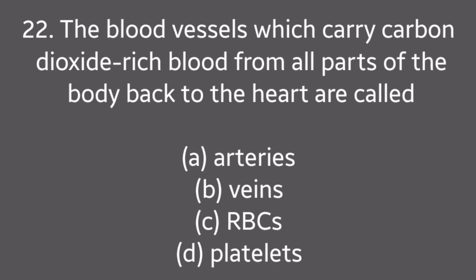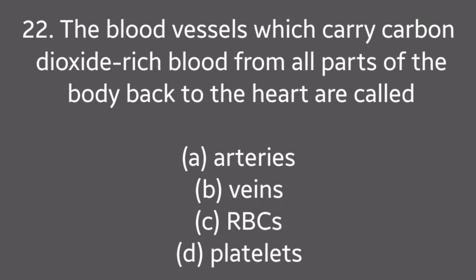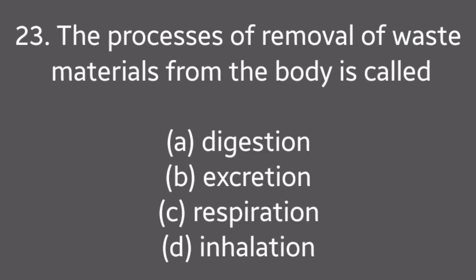Question No. 22: The blood vessels which carry carbon dioxide-rich blood from all parts of the body back to the heart are called — Arteries, Veins, Arterioles, Platelets. Answer is Option B: Veins.